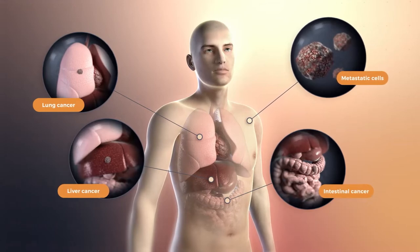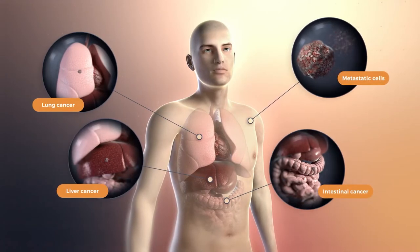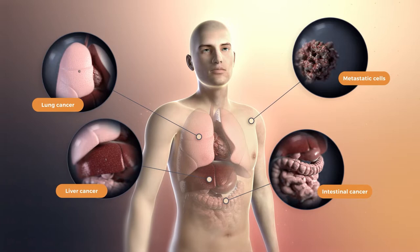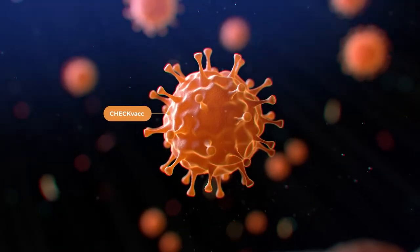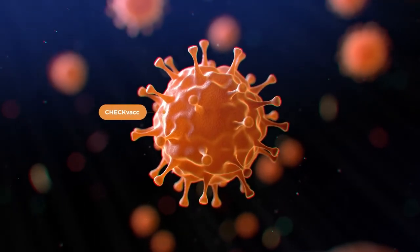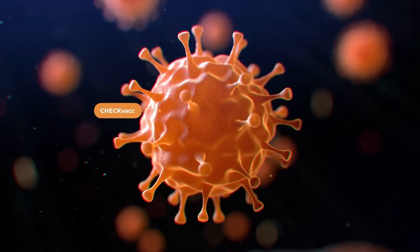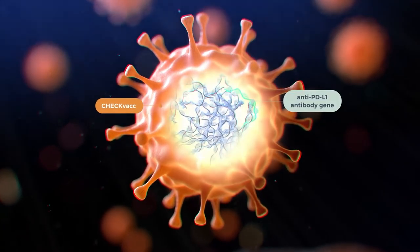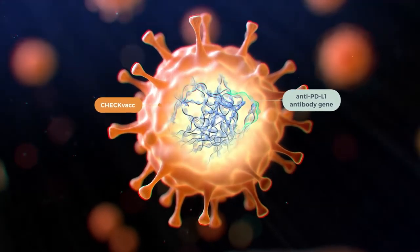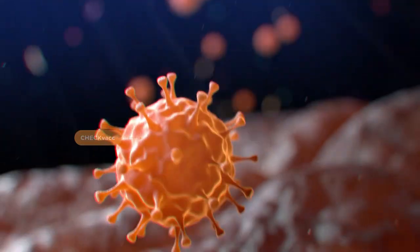CF33 can shrink multiple cancer types and is effective for both primary and metastatic tumors. CheckVac is based on the CF33 platform and has further enhanced tumor-killing ability by adding an anti-PD-L1 antibody gene, which the virus delivers to the cancer cell.